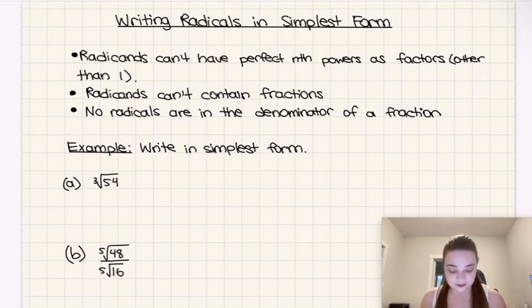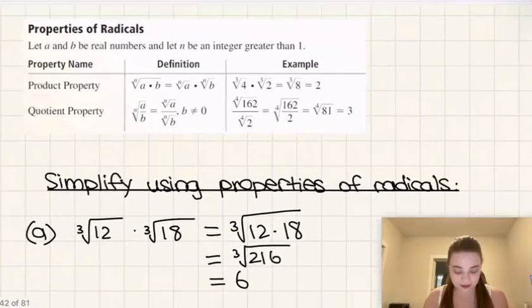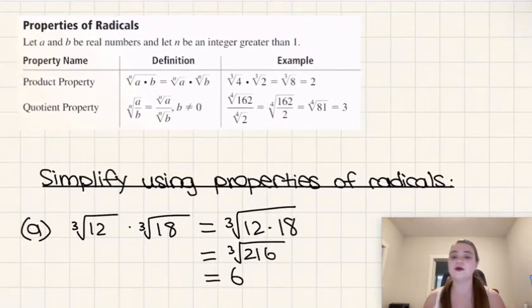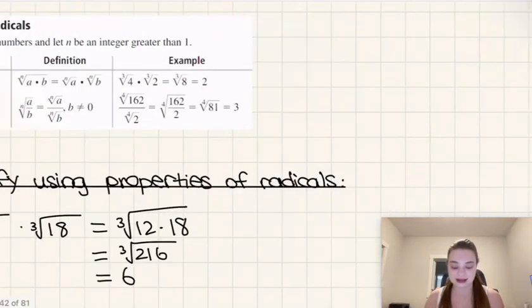The next one is that radicands can't contain fractions. Now the great news is that we know how to combat that. If a radicand does contain a fraction, we can separate the fraction via the quotient property that we discussed in the last video, but we do need to make sure we do that if that's the case.